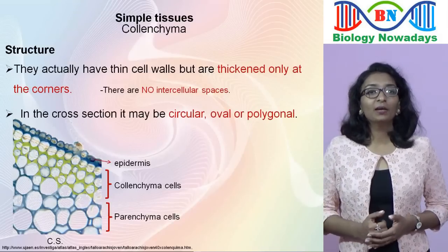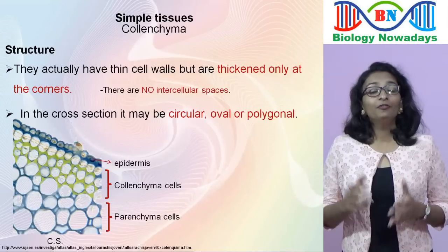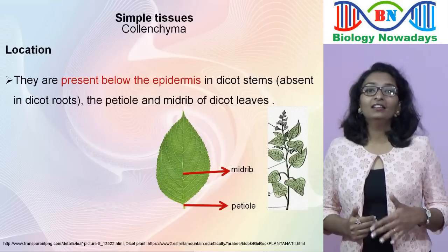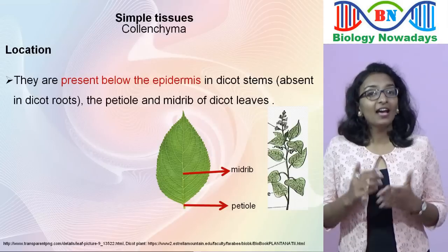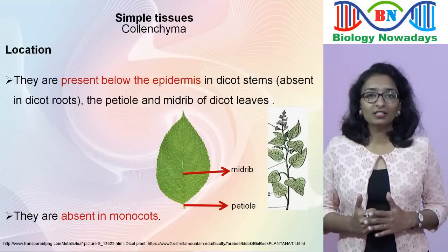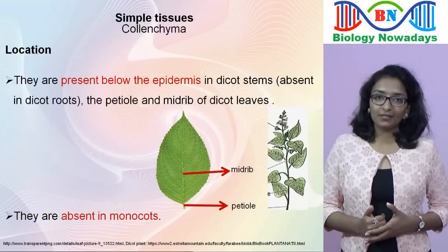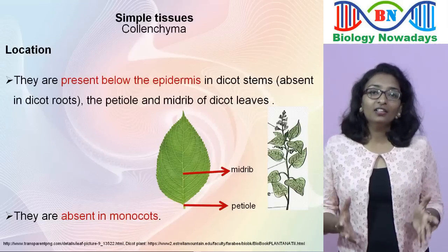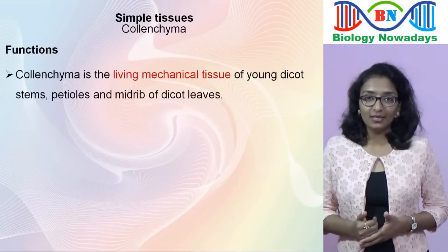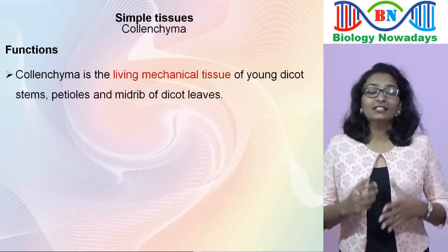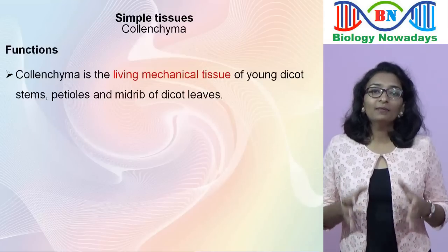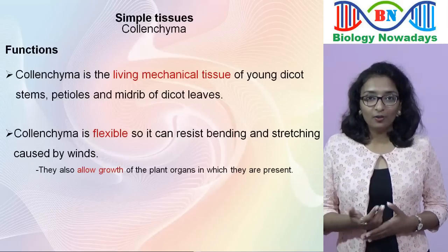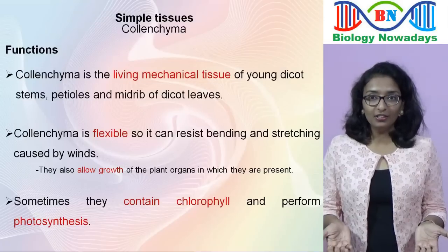In cross section, the colenchyma cells may be circular, oval or polygonal, and in longitudinal section they are elongated cells. They are present below the epidermis in dicot stems and in the petiole and midrib of dicot leaves, and are absent in monocots. The reason is that most monocots develop sclerenchyma tissues in their early stages, and sclerenchyma provides more mechanical support than colenchyma. Colenchyma is the living mechanical tissue found in young dicot stems, petioles and midribs. Since the cell wall thickening is only at the corners, colenchyma cells are flexible and can resist bending and stretching caused by winds. They also allow growth of the plant organs in which they are present, and sometimes contain chlorophyll and perform photosynthesis.